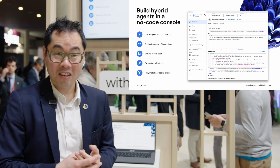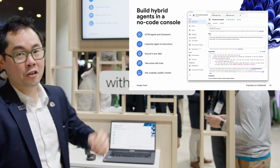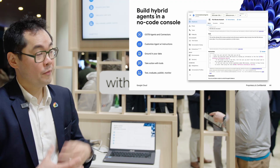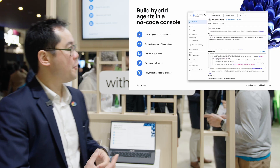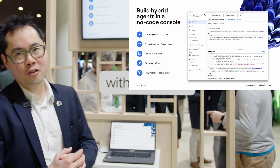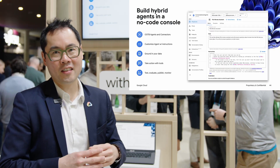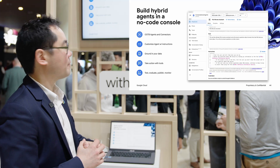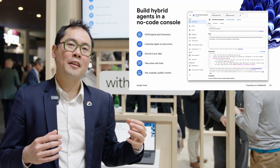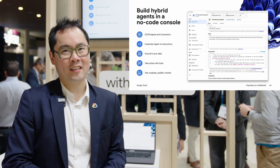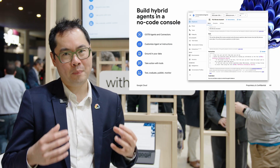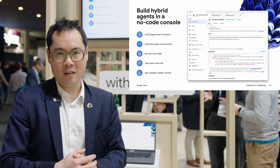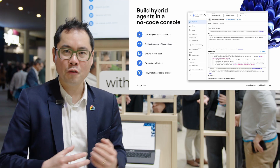Everything is in English — my references to tools are all inline in natural language. There's no code, no Python. I just make all my references directly inline inside the console and interact with that agent. There are a whole bunch of other features that come out of the box with Conversational Agents that allow you to build grounded agents that can handle your enterprise scenarios.